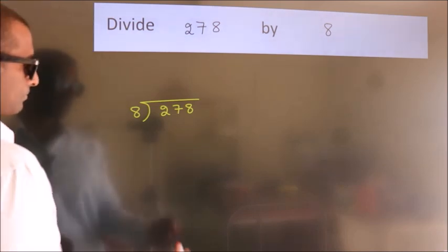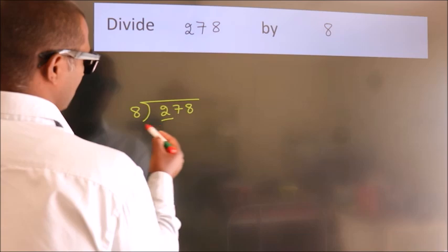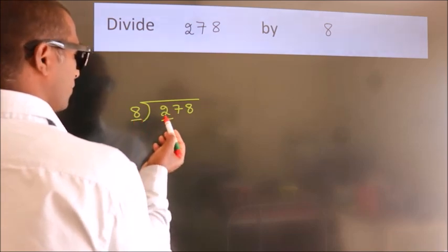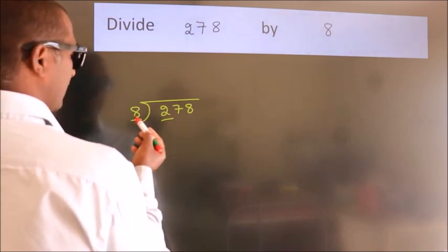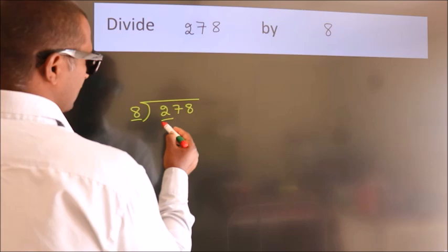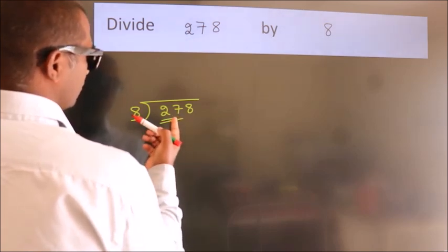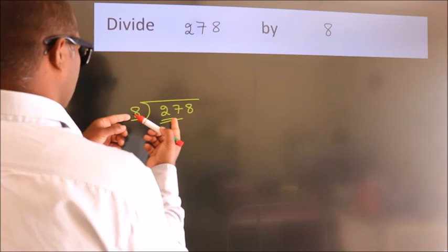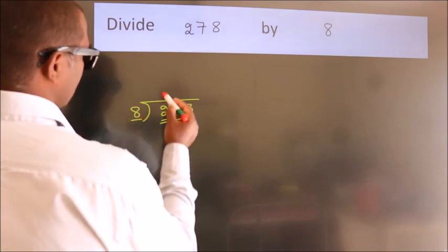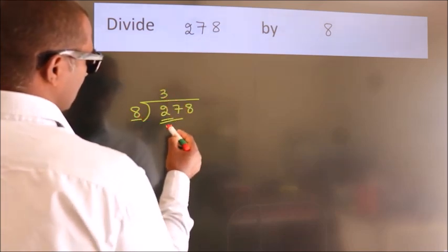Next, here we have 2. Here 8. 2 is smaller than 8, so we should take 2 numbers: 27. A number close to 27 in the 8 table is 8 threes, 24.